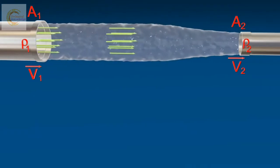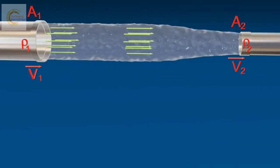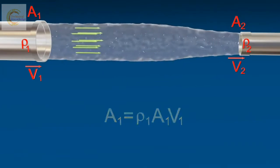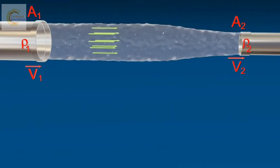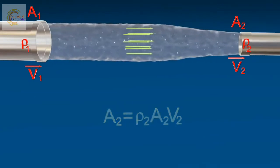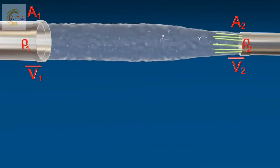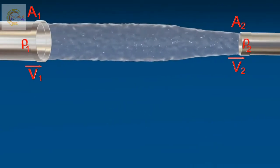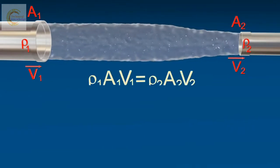Therefore, mass of liquid entering per second at A1 and mass of liquid leaving per second at A2. Assuming there is no loss of fluid in tube, that is, for ideal fluid.